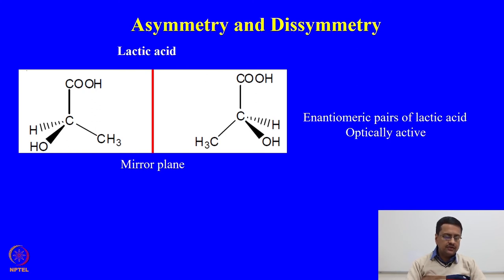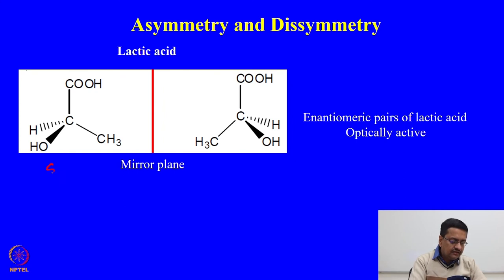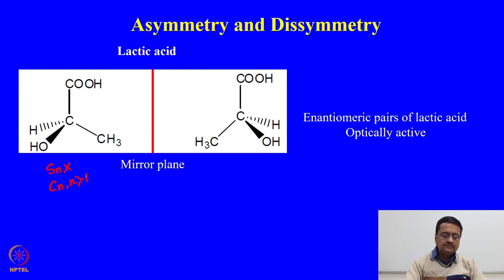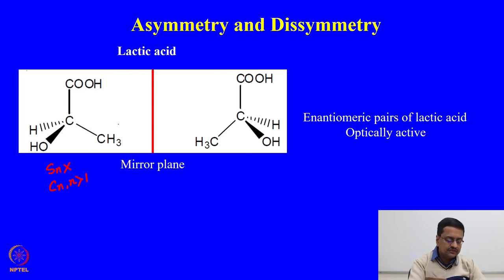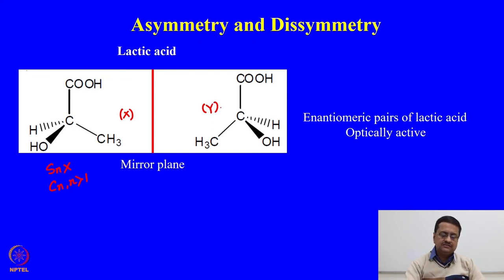Looking at lactic acid, we see that the molecule does not have any alternating axis of symmetry — there is no S_n and no C_n with n greater than 1. So this molecule is an asymmetric compound, and the corresponding mirror image is non-superimposable with the original compound. These two representations are non-superimposable mirror images — enantiomeric pairs of lactic acid — hence they are optically active.